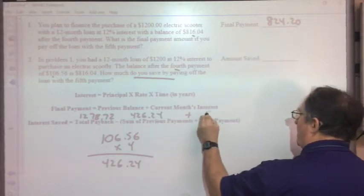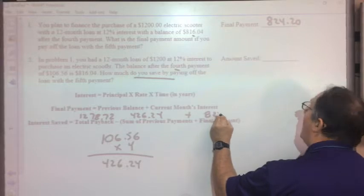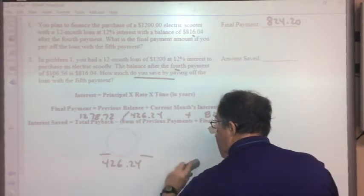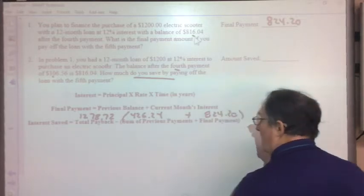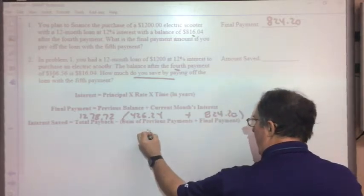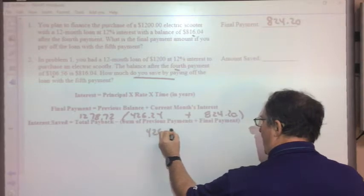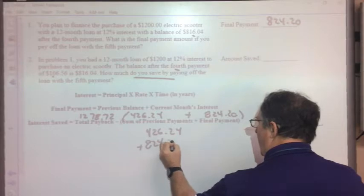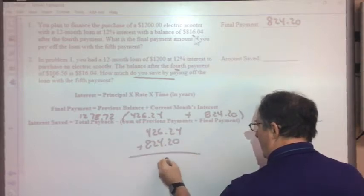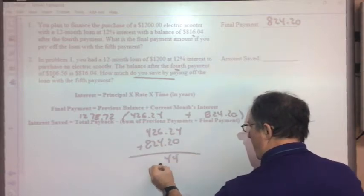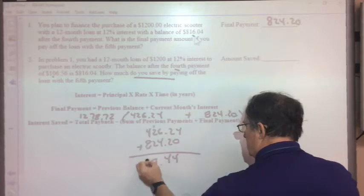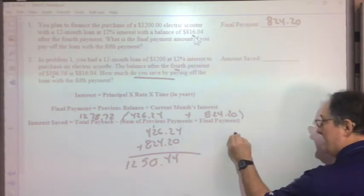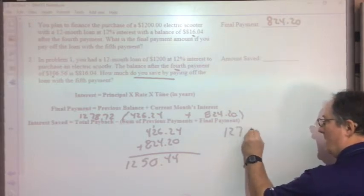I'm going to add that to question number one's answer, which is what I paid to pay it off, $824.20. So $426.24 plus $824.20, which is basically what I have paid on this loan. By the time I've paid the loan, $1250.44.